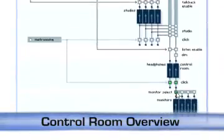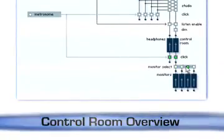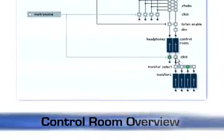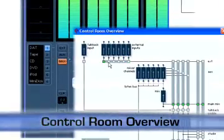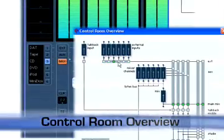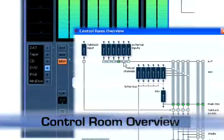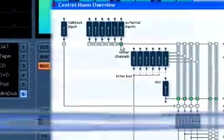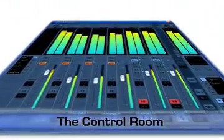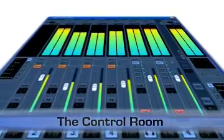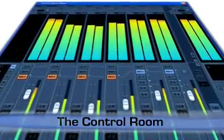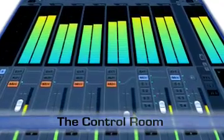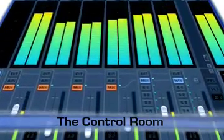The routing of all control room buses can be monitored and edited via the control room overview window. All elements and their possible connections are displayed with green dots marking existing connections. With the addition of the virtual control room and suitable multi-channel audio I/O hardware, virtual studio technology is brought to a whole new level.